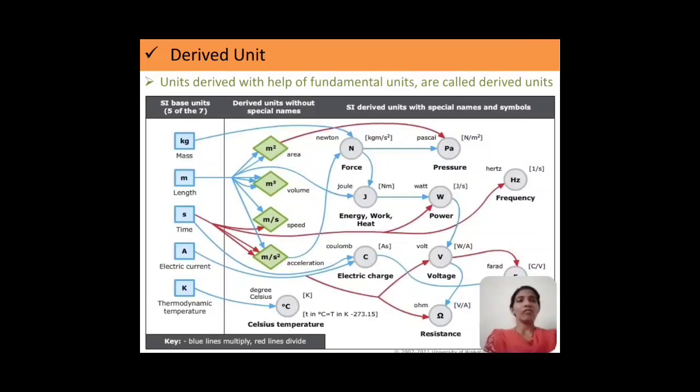Now we will move ahead with the derived unit. Derived unit, as the name suggests, is derived with the help of fundamental quantity or with the help of fundamental units. We can find out the derived unit. For example, we can say area depends on length. Length is a fundamental quantity. Volume, again length cubed. Speed: distance upon time. Distance and time both are fundamental quantities, whereas speed is a derived unit or derived quantity. Its unit will be meter per second. If we talk about the acceleration, which is a derived quantity, the unit is meter per second squared, since it depends on distance upon time squared. Similarly, you can go through force, energy, work, heat, and we can find out electric charge with the help of fundamental units.